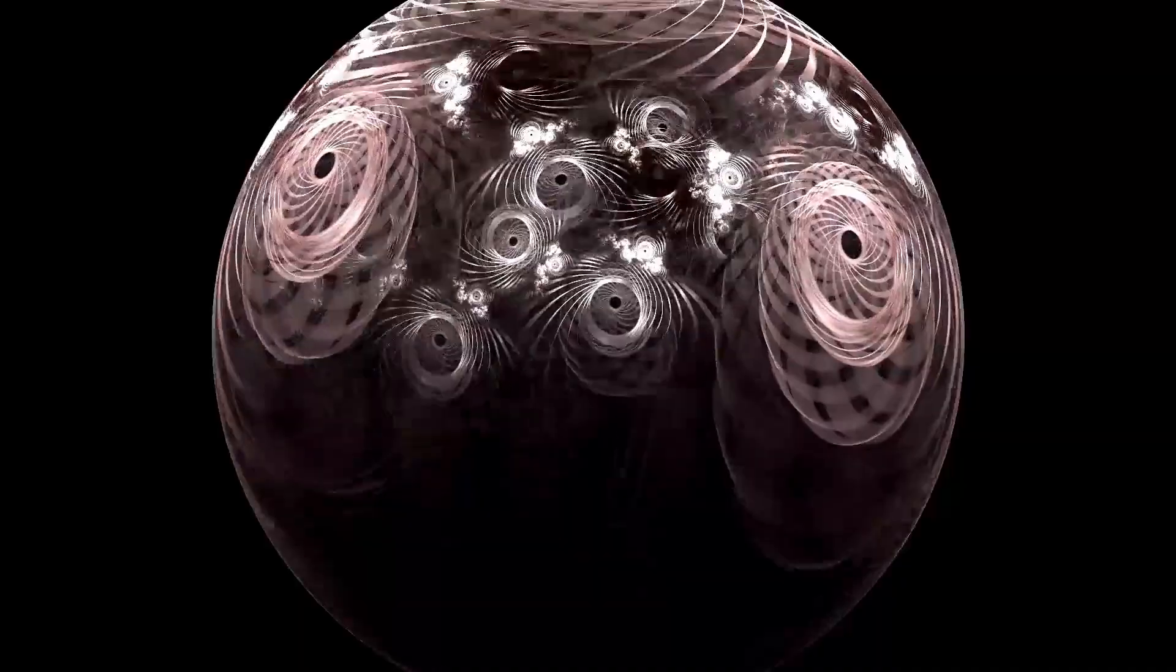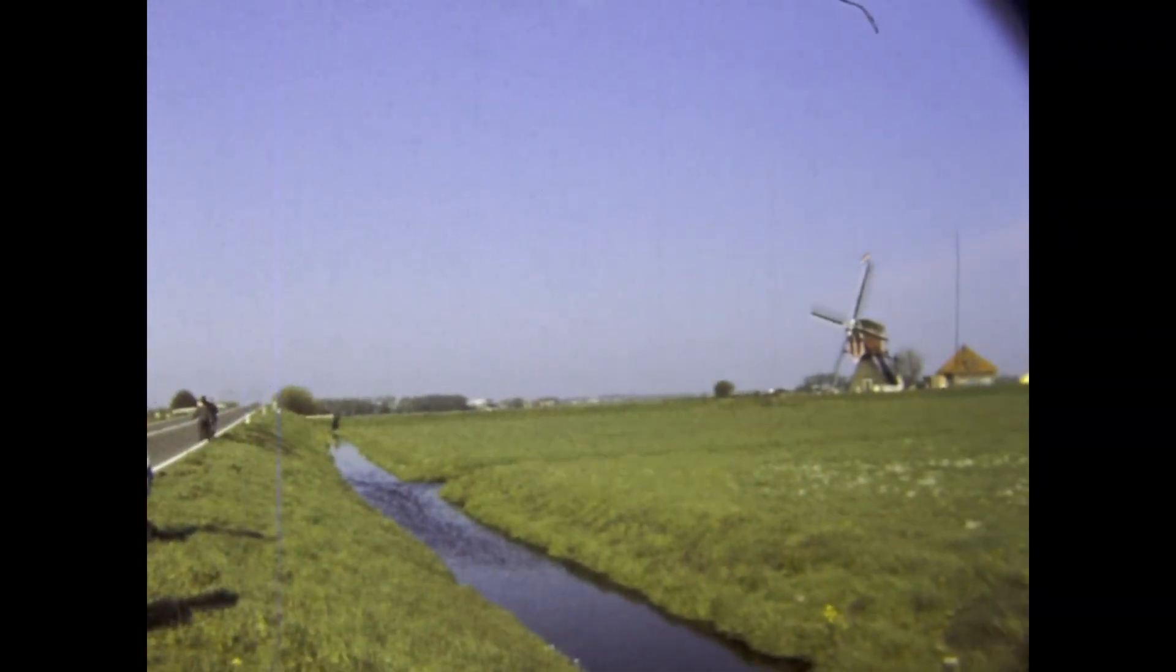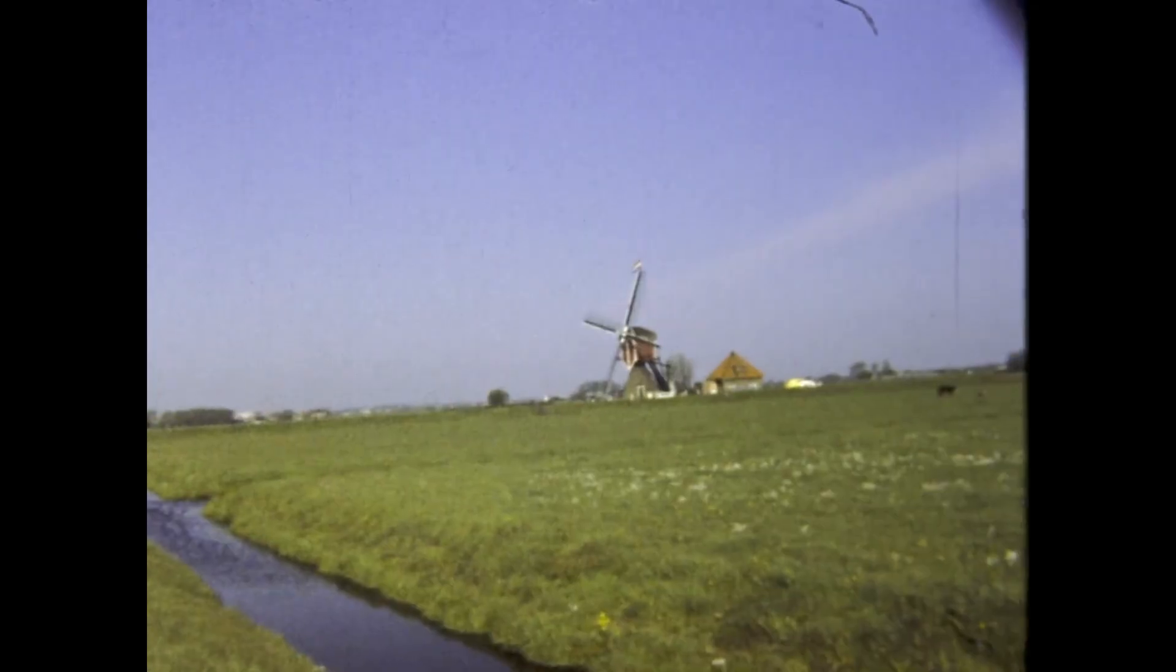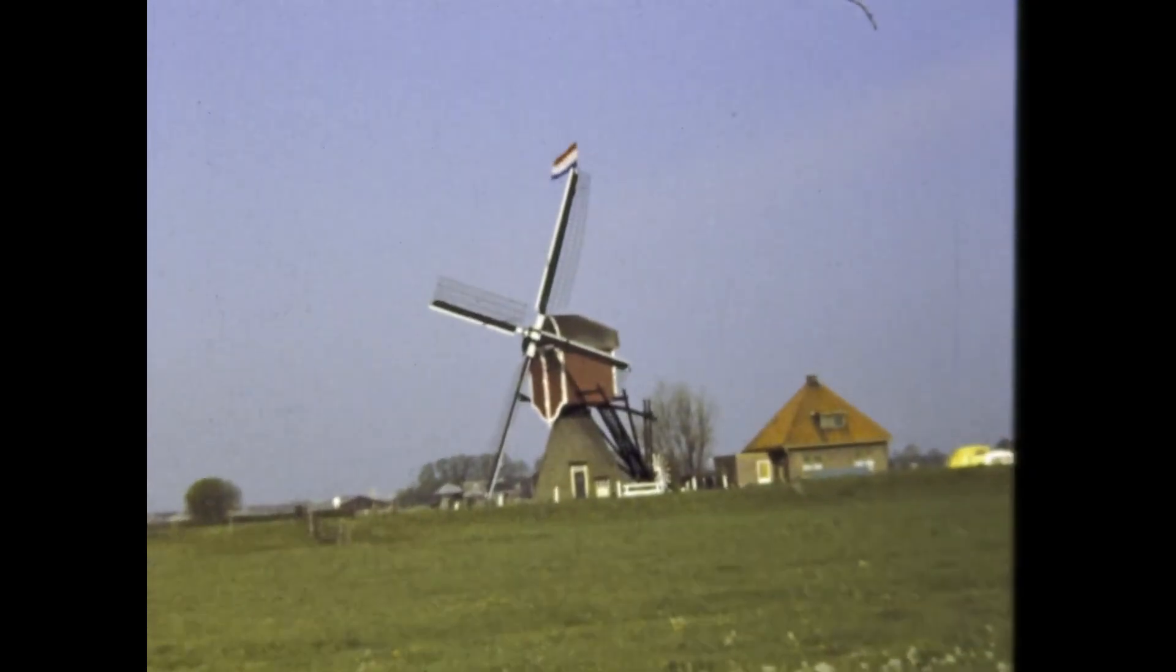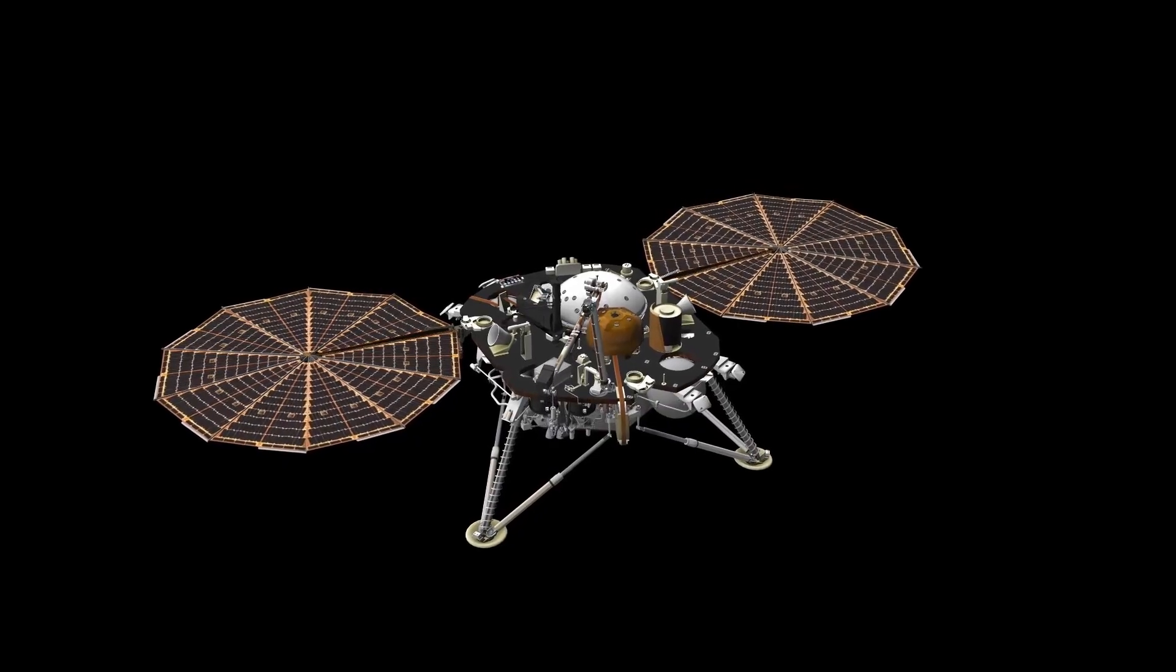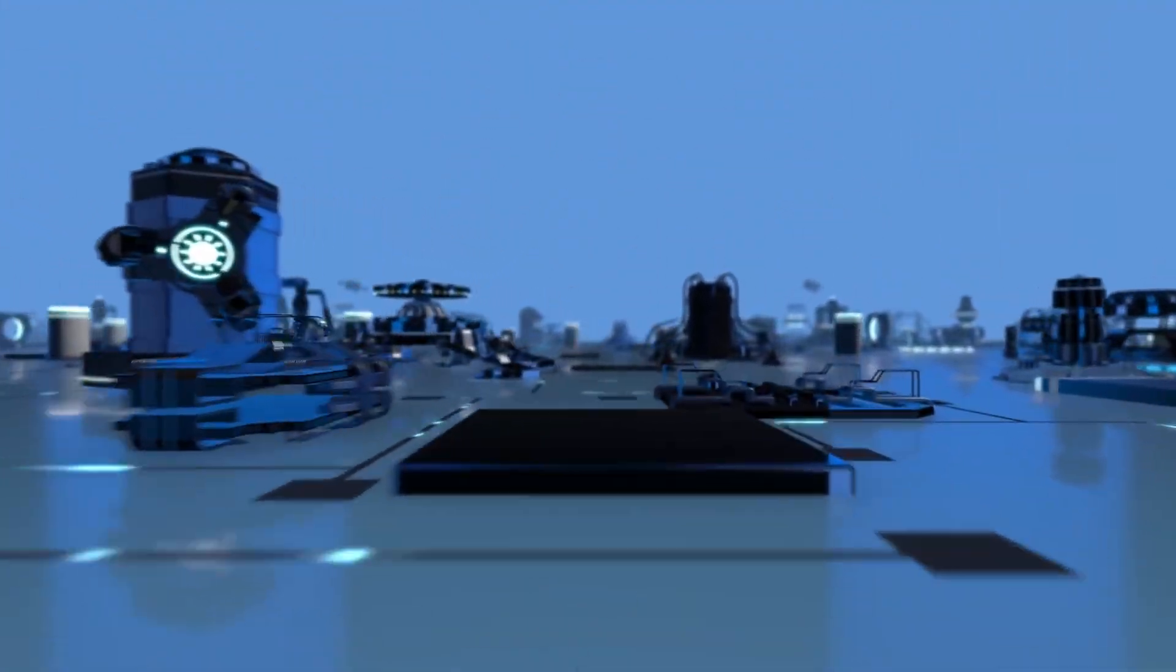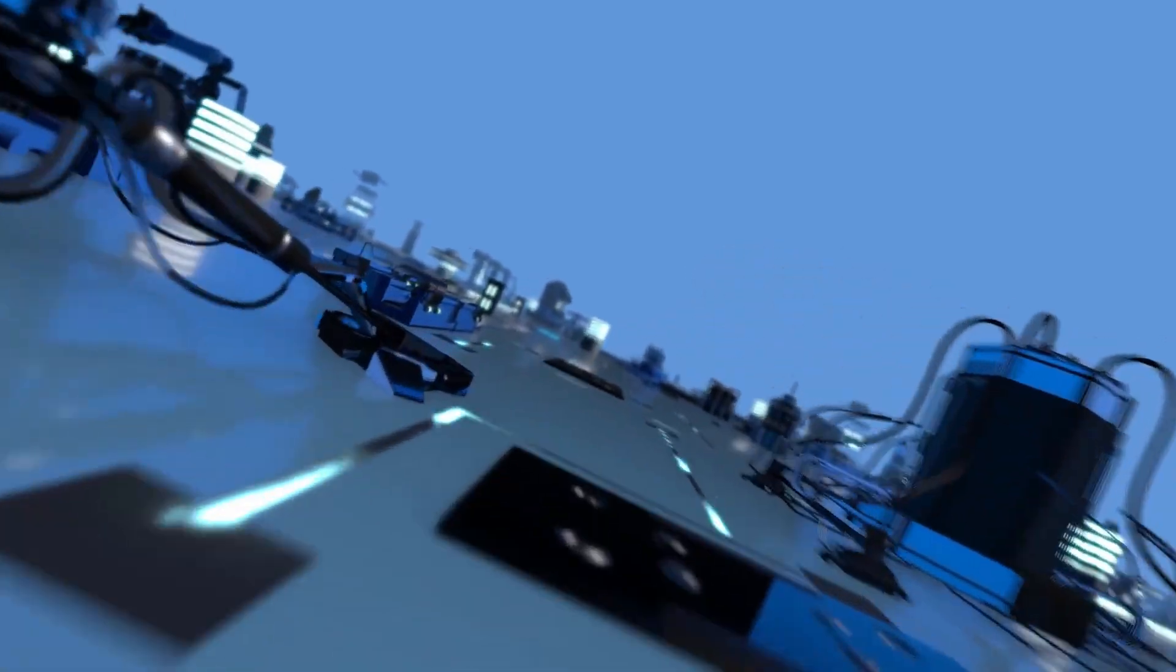As the years passed, the Voyager spacecraft traveled farther than anyone could have imagined, pushing past the heliosphere, the protective bubble surrounding the sun and our solar system. Voyager 1 crossed this threshold in 2012, followed by Voyager 2 in 2018, both entering the uncharted expanse of interstellar space.